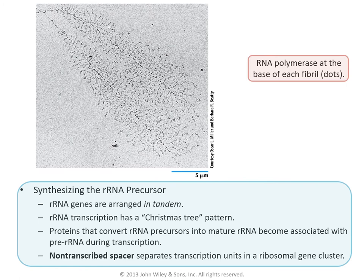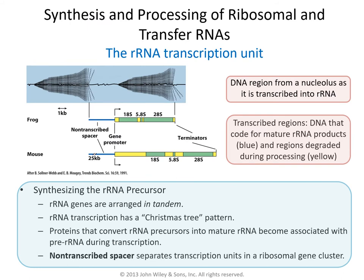Here is a closer view of the ribosomal DNA being transcribed. More evident here are the dots found at the base of each fibril. The fibrils are the nascent ribosomal RNA molecules, and those dots are actually the RNA polymerase. This drawing shows the appearance of a portion of DNA from the nucleolus as it is transcribed into ribosomal RNA, along with one transcription unit coding for ribosomal RNA in Xenopus and in mouse.